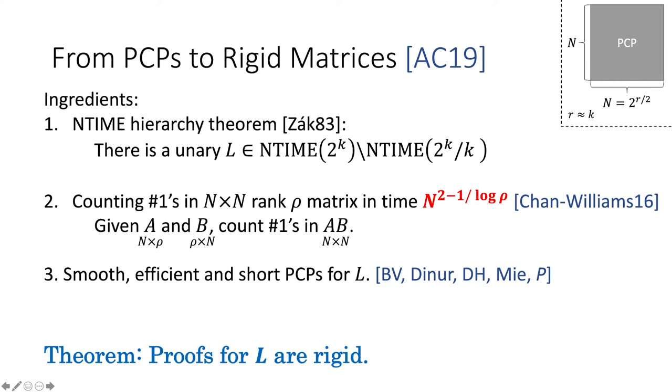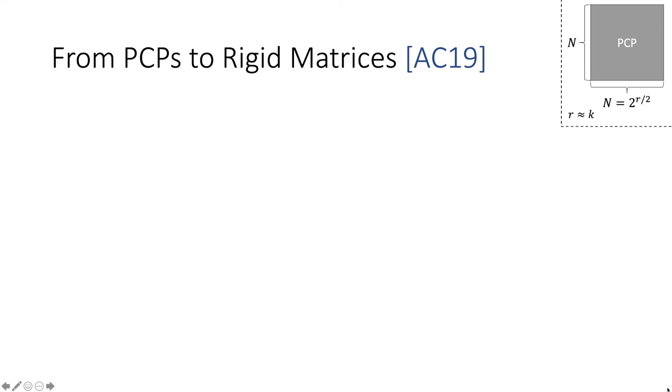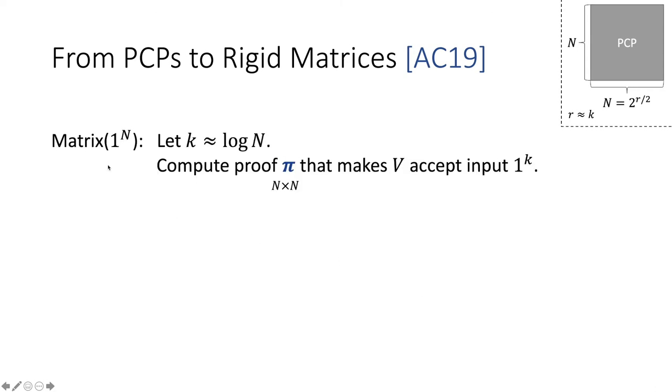And then the theorem that Alman-Chan proved is that proofs for this language L in this proof system are rigid. So what do I mean by this? I mean that we have a procedure to generate rigid matrices. The procedure, when it wants to generate an n by n matrix, it chooses k such that k is roughly log n. We want all of these parameters to work out. Then it computes a proof pi that should make the verifier accept the input 1 to the k. Now, one thing to observe is that this computation of a proof pi can indeed be done in polynomial time if you have access to an NP oracle. You can guess the proof bit by bit and then eventually verify this guess in polynomial time by enumerating over all the randomness of the verifier.